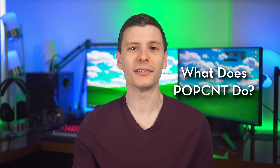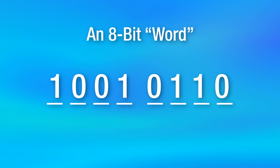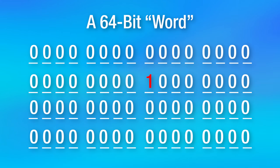What exactly is this population count instruction? At the risk of sounding too technical, it simply counts the number of 1-bits set in a so-called machine word. A word is simply a certain number of defined bits — for example, in a 64-bit CPU, a word is 64 bits long. So if you have a big 64-bit word and there's only one '1' in there, then the population count would be one.